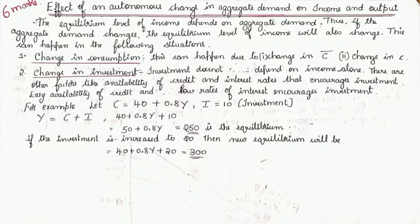First of all, we know that the equilibrium level of income is the point where demand and supply lines intersect. That we call as equilibrium. The equilibrium level of income depends upon the aggregate demand. So if aggregate demand changes, what happens? The equilibrium level of income will also change.